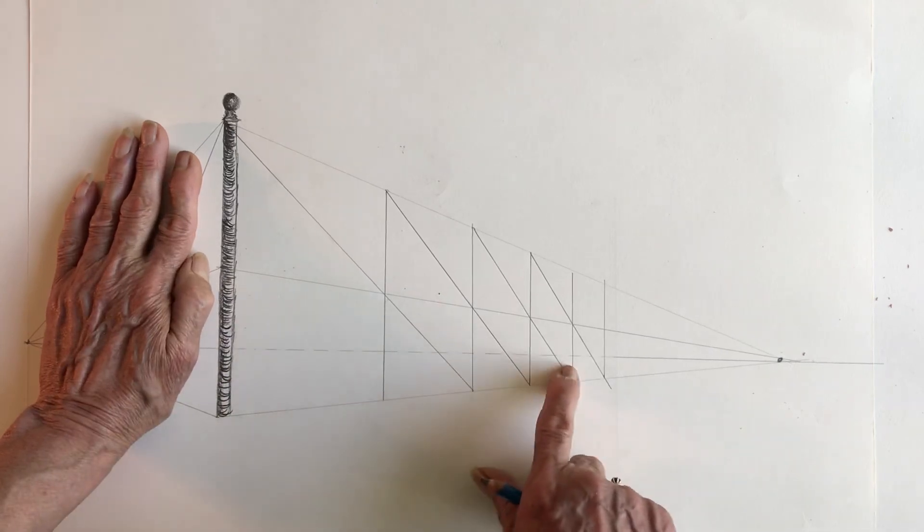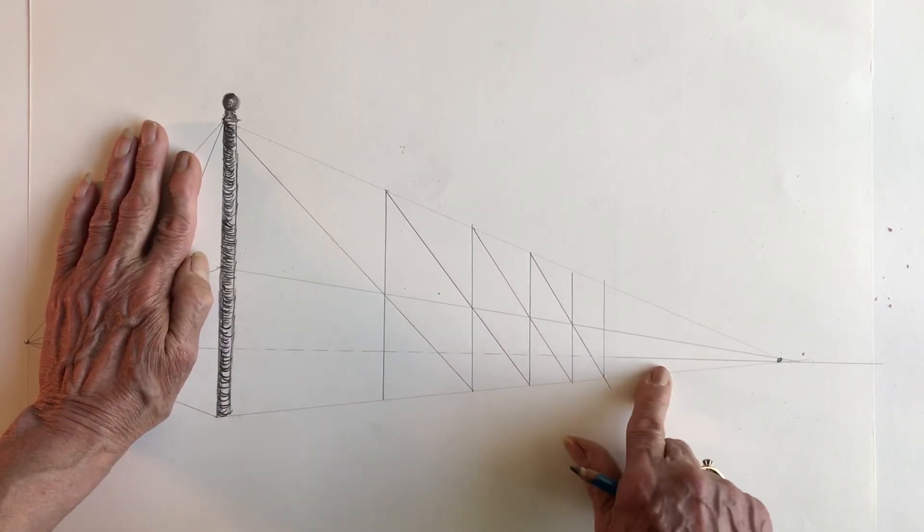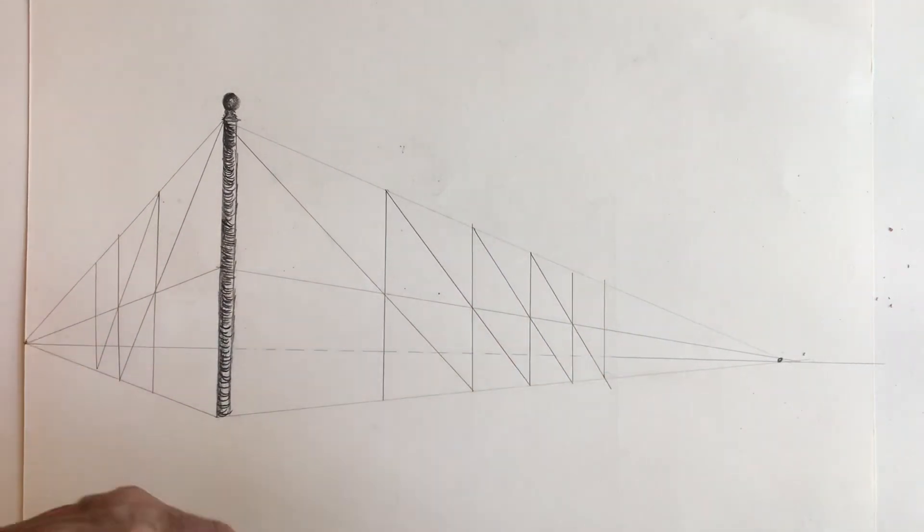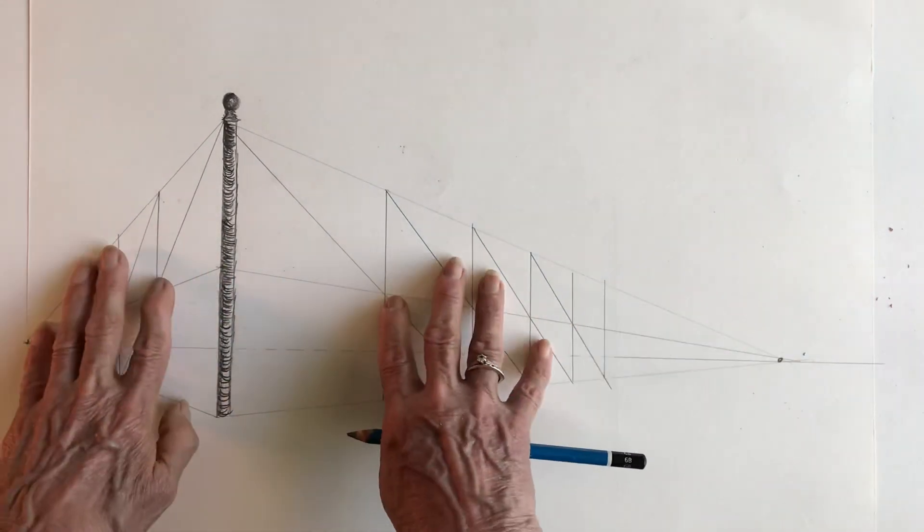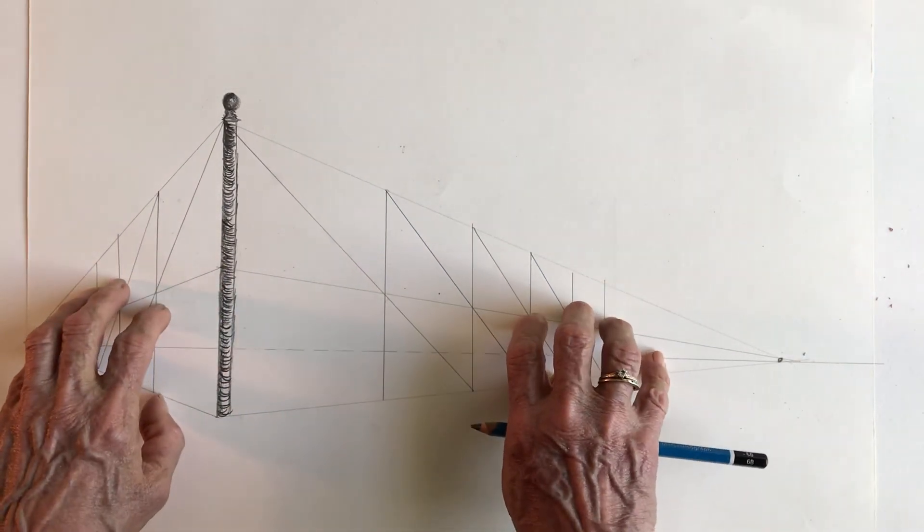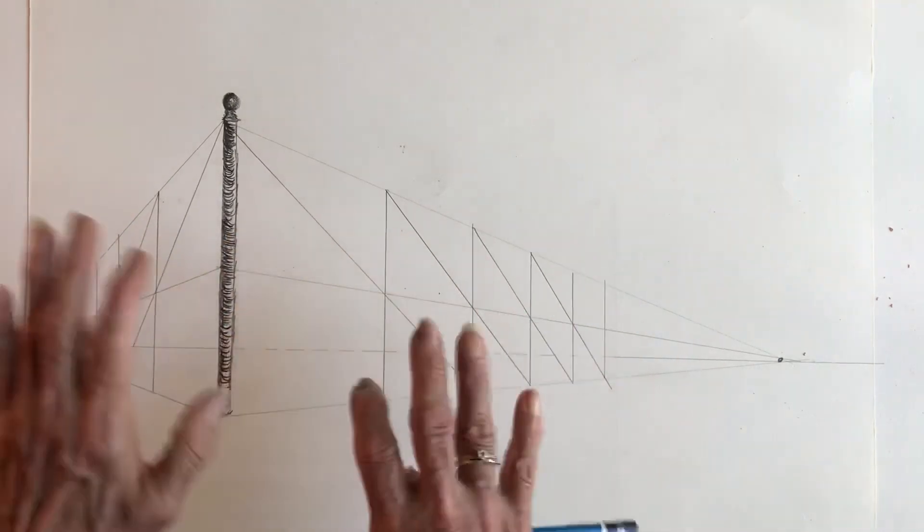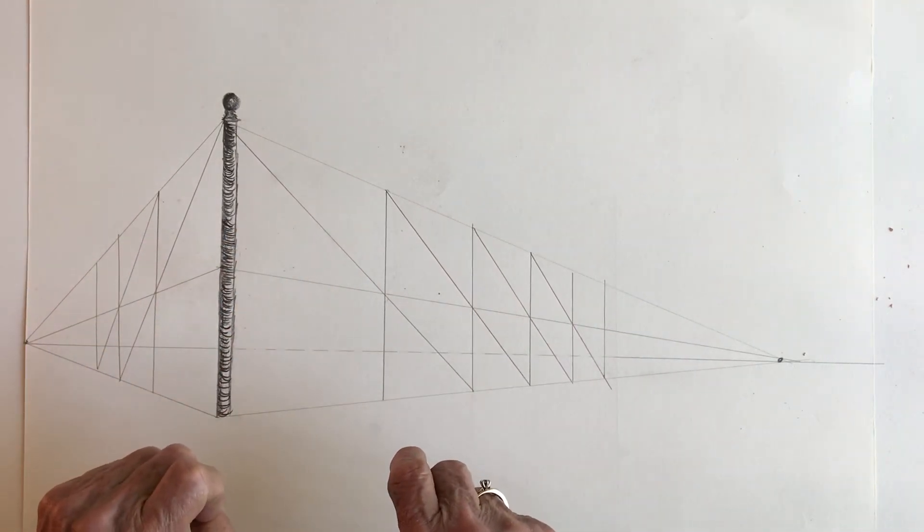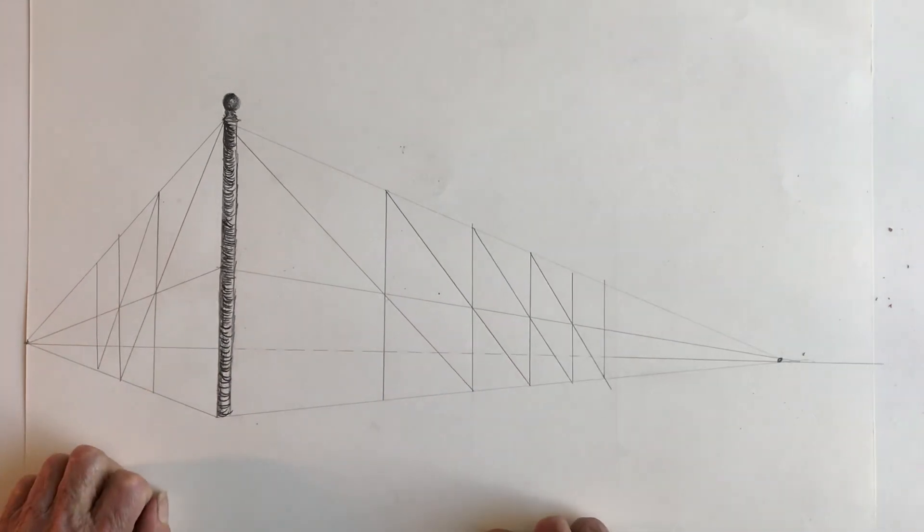You don't have to do two point perspective. You can just do one point perspective, which means you would do one, two, three, four, five, six. You would just draw two more posts this way. In the end, after you have your drawing, you're going to erase all of the construction lines that are still visible. I think that's it for this video. Have fun.